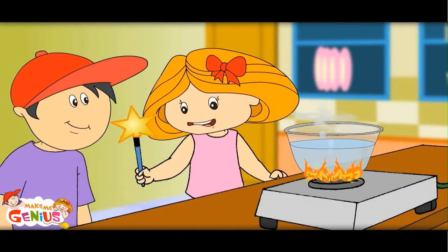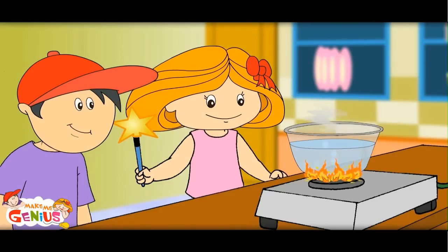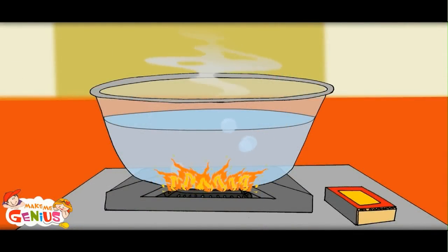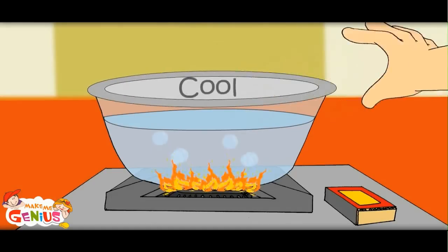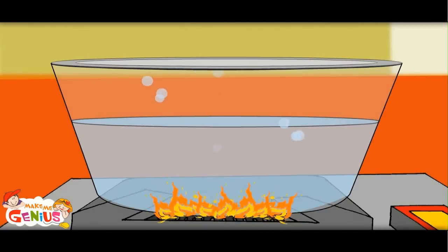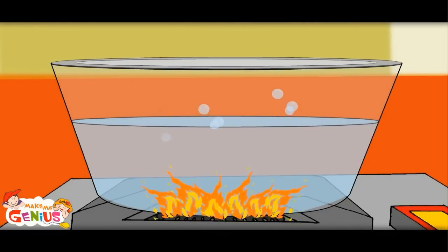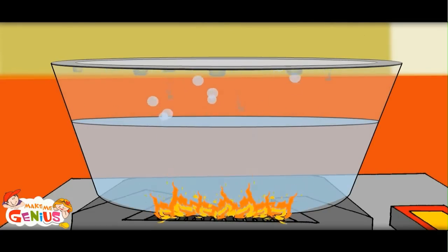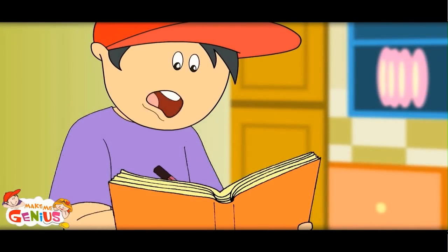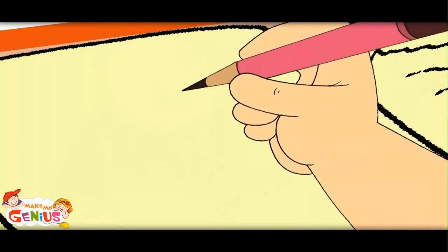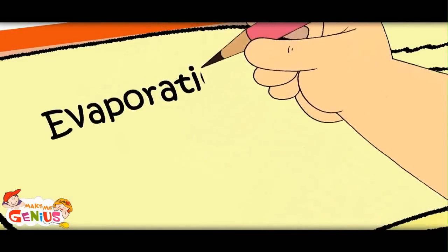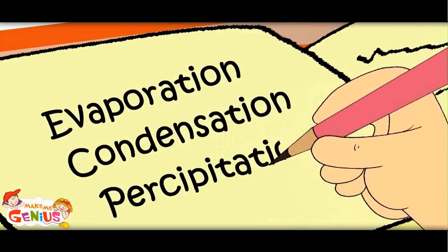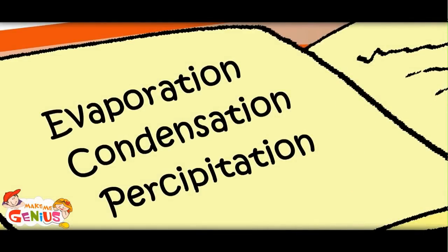Let me show you how to make rain at home. Water is turning into vapor due to heating, like the sun heats the water in ponds and rivers and water becomes vapor. Let me put a cover on it. Water gets evaporated due to heat. It reaches the cover. As the cover's temperature is low, it condenses. Then more water drops combine and it precipitates. First, evaporation happens, then water molecules come close and condensation happens. Then drops become bigger and heavier and precipitation happens.